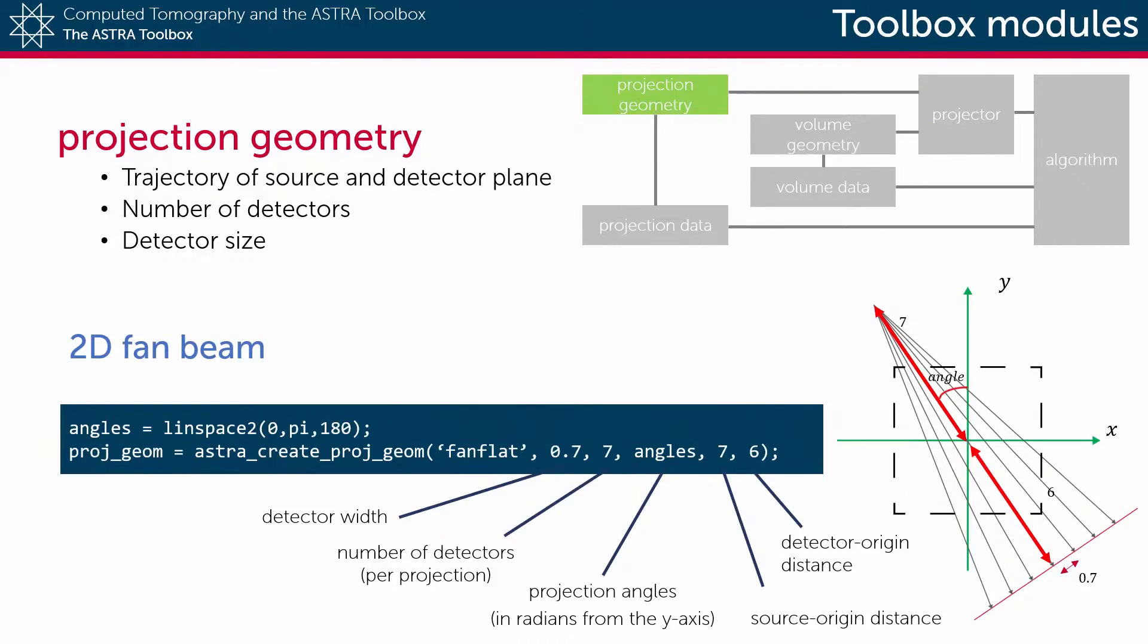A two-dimensional fan beam geometry is created in exactly the same way but has two additional arguments: the distance from the x-ray source to the origin of the coordinate system and the distance from the origin to the center of the detector array.